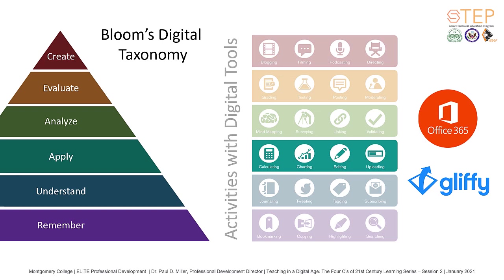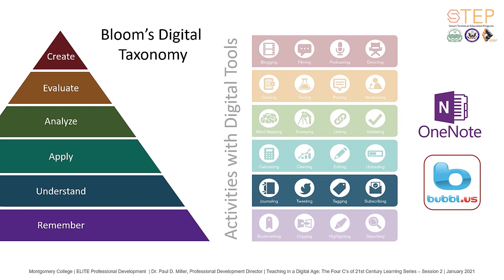As students develop their critical thinking skills, they are often asked to comprehend and grasp the meaning of content — to explain, infer, predict, compare, contrast, or interpret materials. Activities with digital tools to support this include journaling, tweeting, tagging, and subscribing to various sources in order to obtain information. One of the best tools of Microsoft Office 365 Suite is OneNote, which can be used for multiple functions and set up as a class. OneNote provides a journal or electronic notebook for students to organize, document, reflect, and create in order to support their learning. Tools such as Bubble.us also allow for multiple students to collaborate in order to share information.